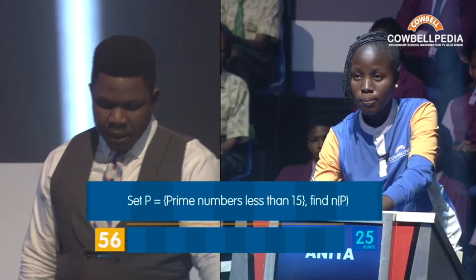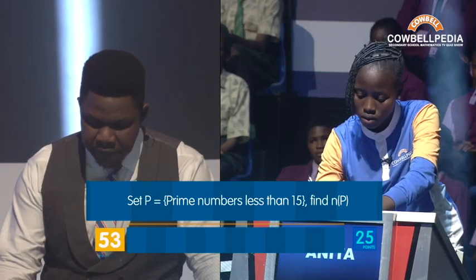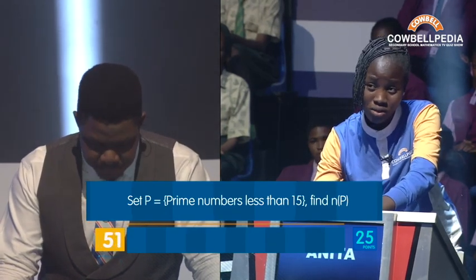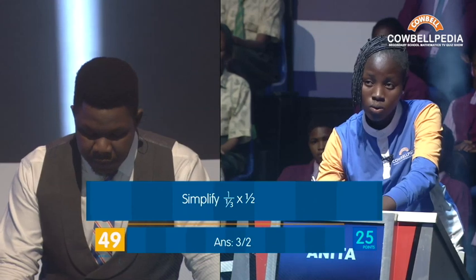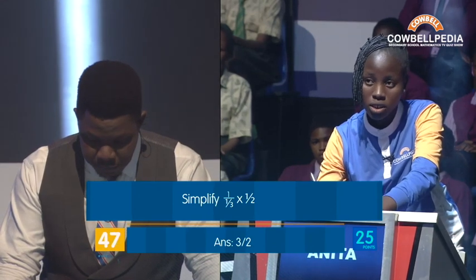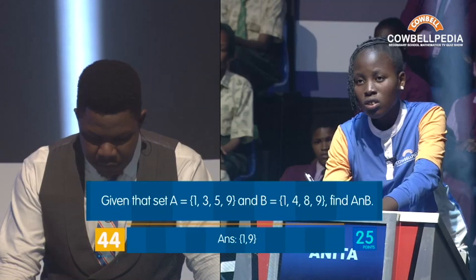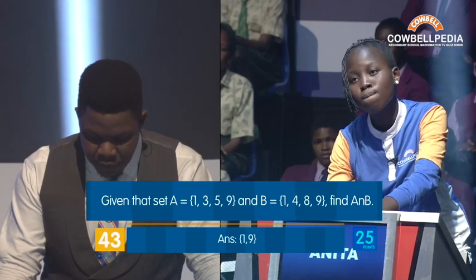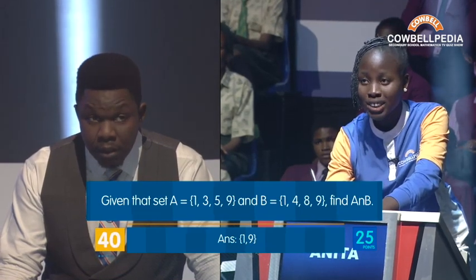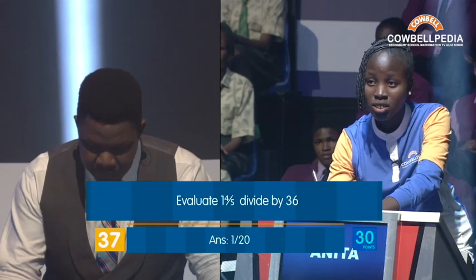Set P uses the prime numbers less than 15, find the intersection of P. Skip. Simplify 1 divided by 1 over 3 times 1 over 2 — 1 over 3. Incorrect. Given the set A is 1, 3, 5, 9 and B is 1, 4, 8, 9, find the intersection — 1 and 9. Correct.